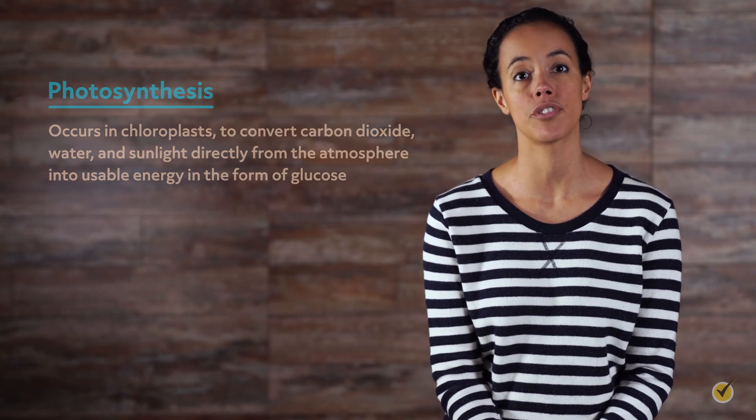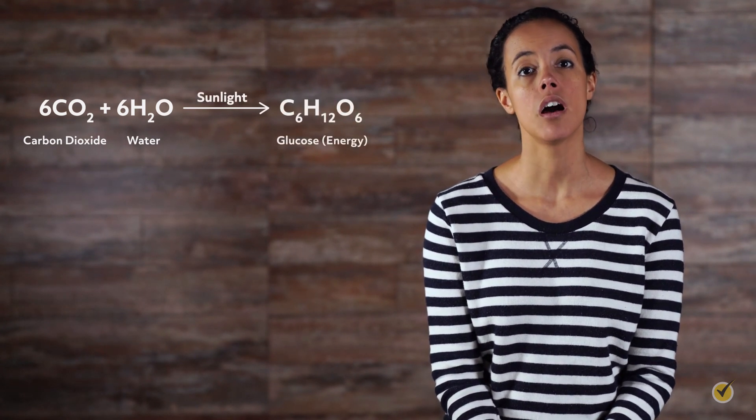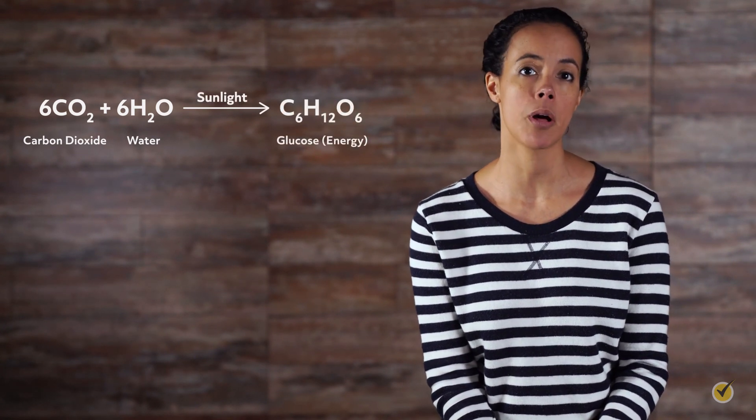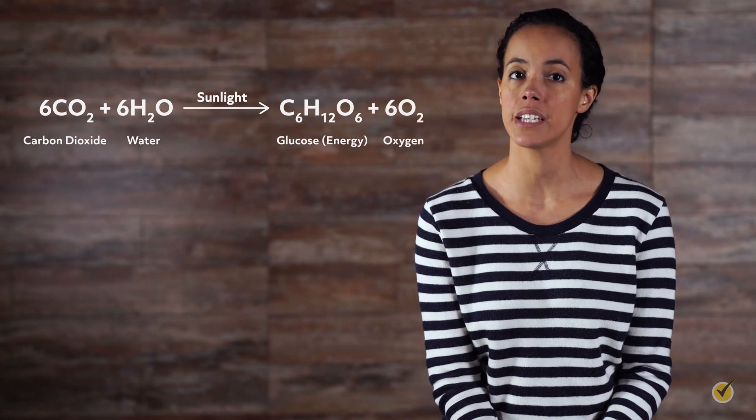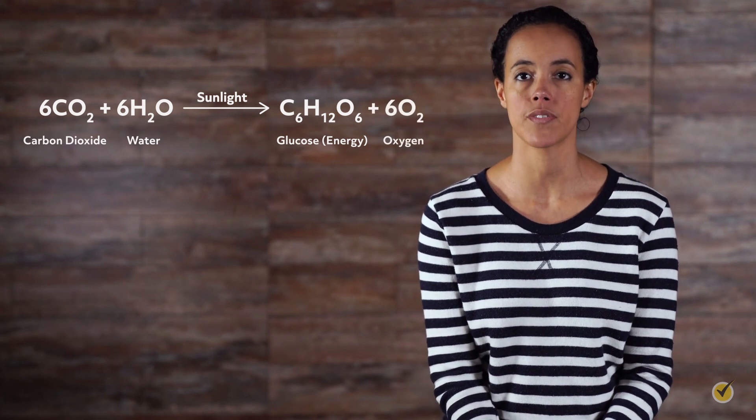Let's look at the equation for photosynthesis. This is a balanced equation: when we take six carbon dioxide molecules and hydrolyze them with six water molecules and photons from the sun, we get a usable form of energy in the form of the sugar glucose, along with six molecules of oxygen that get released into the atmosphere.